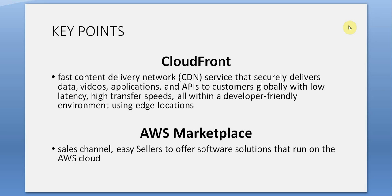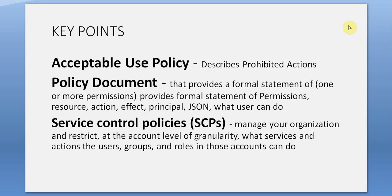AWS Marketplace: a sales channel that makes it easy for sellers to offer software solutions that run on the AWS cloud. Acceptable Use Policy: describes and prohibits certain actions. A policy document provides a formal statement of one or more permissions — including resource, action, effect, and principal — written in JSON, defining what a user can do.